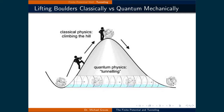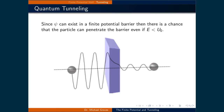For quantum particles, however, this is not the case. Regardless of their energy, there is a probability that they will tunnel through the barrier and emerge on the other side. This is because the wave function is non-zero inside finite potential barriers.